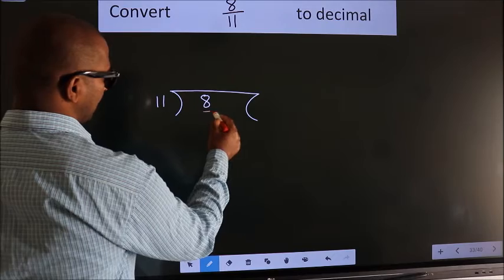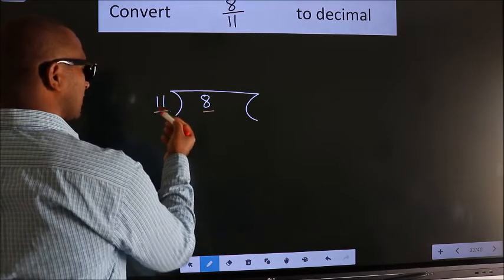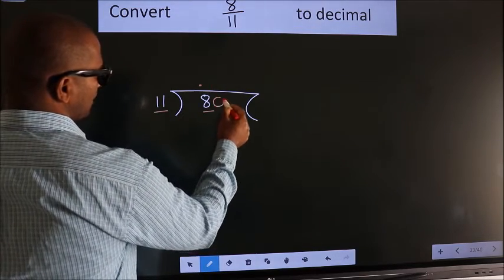Here we have 8, here 11. 8 is smaller than 11. So what we do is we should put dot, take 0.